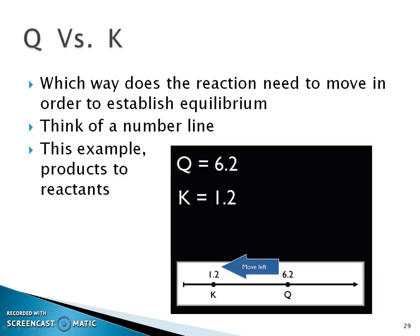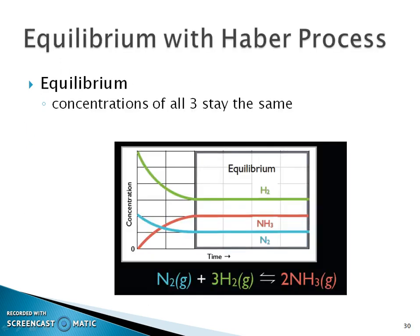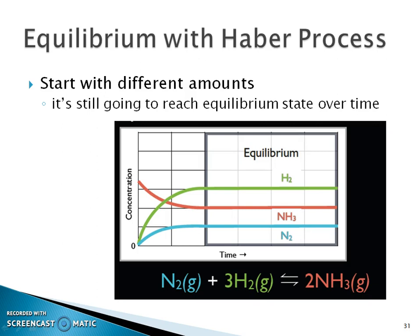Remember, the concentrations are not the same — they are related to the coefficients of the balanced equation. But at some point the rate of the forward reaction equals the rate of the reverse, and that's when equilibrium happens. Q versus K on the number line: if Q is greater than K it shifts left. With the Haber process, the three concentration lines represent the three different coefficient ratios, and equilibrium is established when all rates are equal.